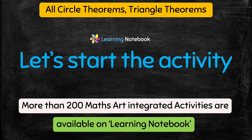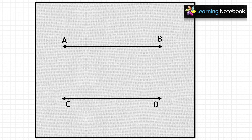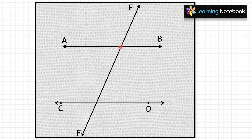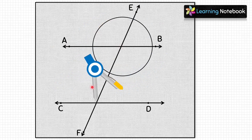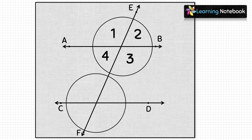Now let's start with the activity. In the first step, take a white sheet of paper and draw two parallel lines AB and CD on it. Then draw a transversal EF which intersects these two parallel lines AB and CD. Taking both intersecting points as centre, draw two circles. A transversal makes 8 angles, so let's name these angles: 1, 2, 3, 4, 5, 6, 7, 8. With the help of scissors, let's cut out these angles.